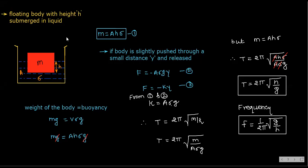Next application: a floating body with height h submerged in a liquid — there is no spring. This is a container with water, and a block of mass m. The height h is what is submerged inside the liquid; let ρ be the density of the liquid and A be the cross-sectional area of the block. At equilibrium, weight equals buoyant force: mg = V·ρ·g = A·h·ρ·g. Cancelling g on both sides: m = A·h·ρ.